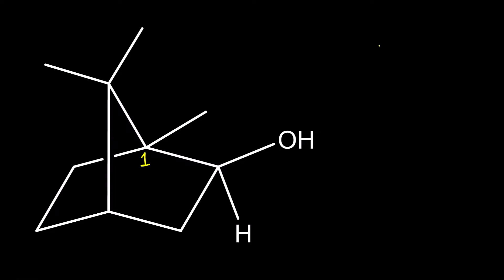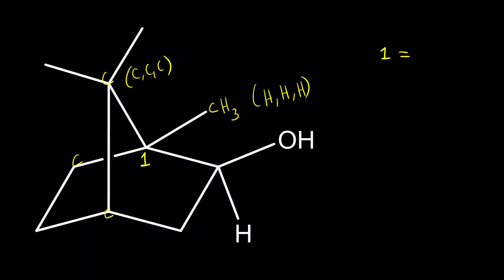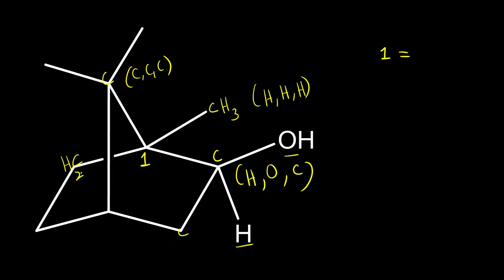Let us find the configuration at carbon one first. How do you do that? First, assign priority based on atomic numbers. You can see the primary atoms are all the same — all are carbons — so what you do is look at the secondary atoms. Here there are three hydrogens, here there are three carbons, here there are two hydrogens. This carbon is attached to hydrogen, oxygen, and another carbon, and this one has two hydrogens and one carbon.